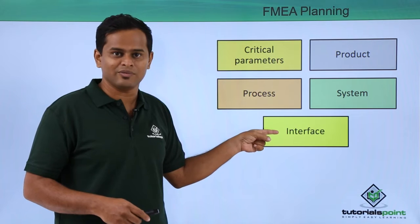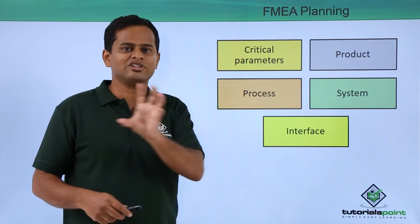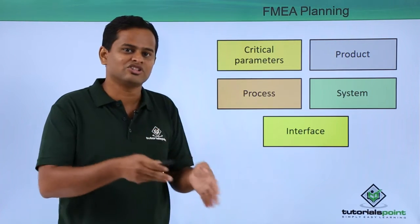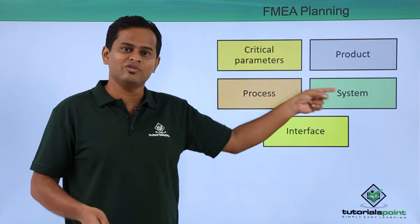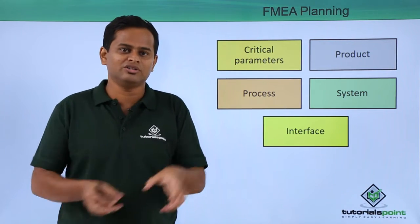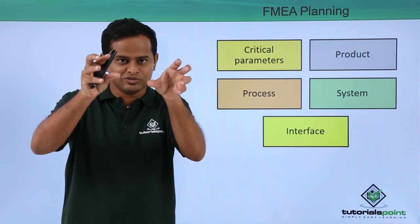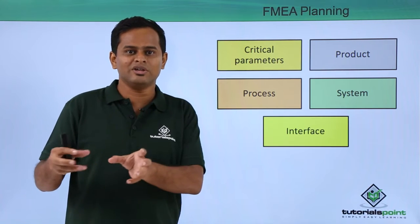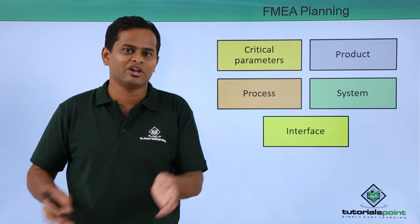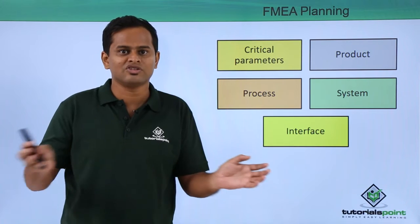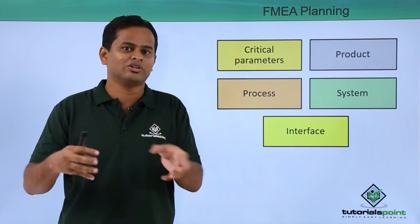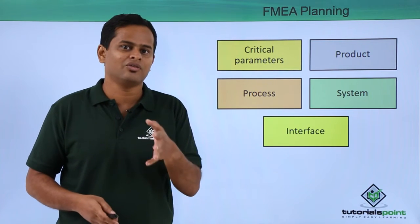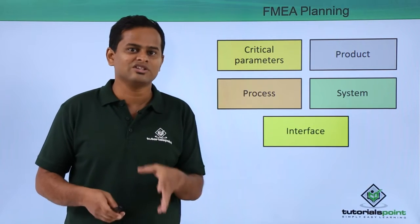Product FMEA will be for a certain component. Process FMEA will be for a certain sequence of operations that's going to happen. System FMEA means — say there is one component and also another component, both working in the same system — so we do a system FMEA. Or it can be through an interface: there can be an electrical interface and also a mechanical interface, so both things merge together.